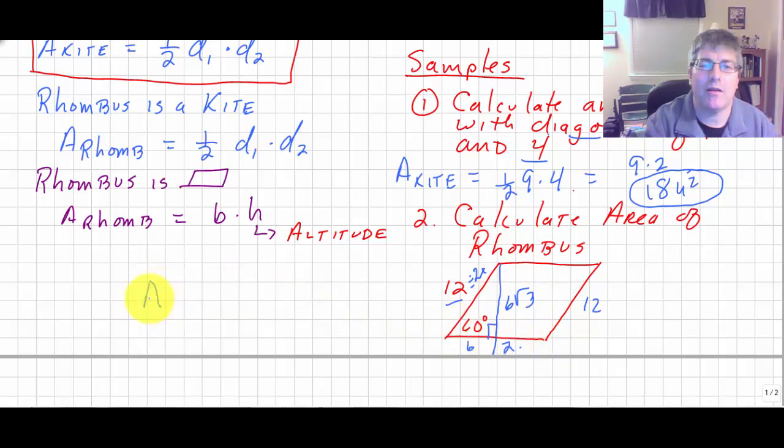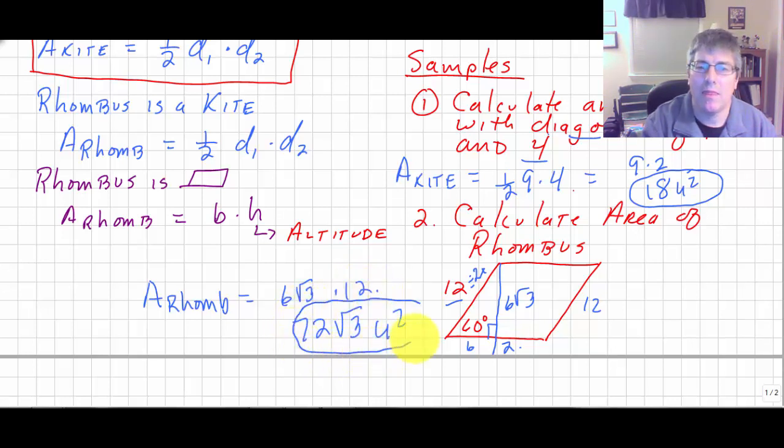So the area of this particular rhombus is equal to 6 radical 3 times 12, or 72 square root of 3 units squared. And instead of figuring out the diagonals, I simply did the height times the base.